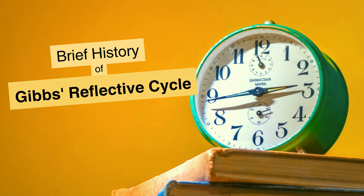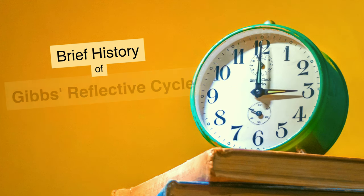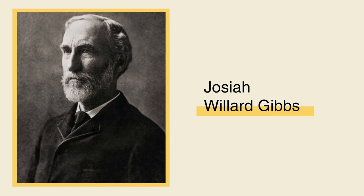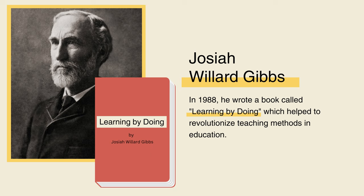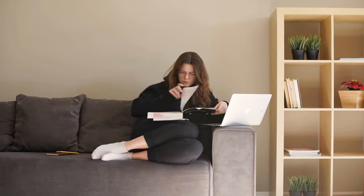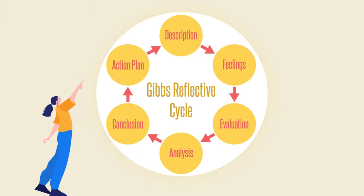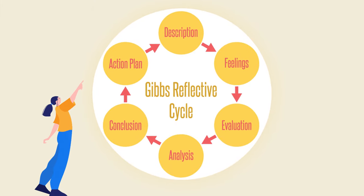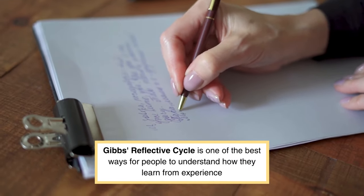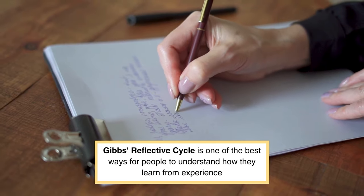Let's dive into the history of Gibbs Reflective Cycle. So buckle up, we're heading back in time. Gibbs Cycle is named for its creator, scientist Josiah Willard Gibbs. In 1988, he wrote a book called Learning by Doing, which helped to revolutionize teaching methods in education. Gibbs emphasized the importance of critical reflection and created the Reflective Cycle as a tool for improving learning through experience. Today, it's still considered one of the best ways for people to understand how they learn from experience.